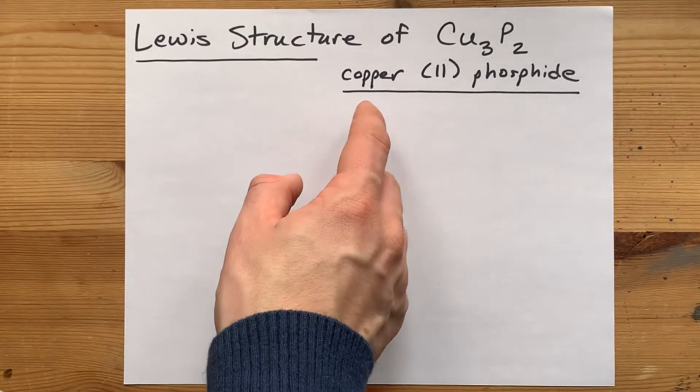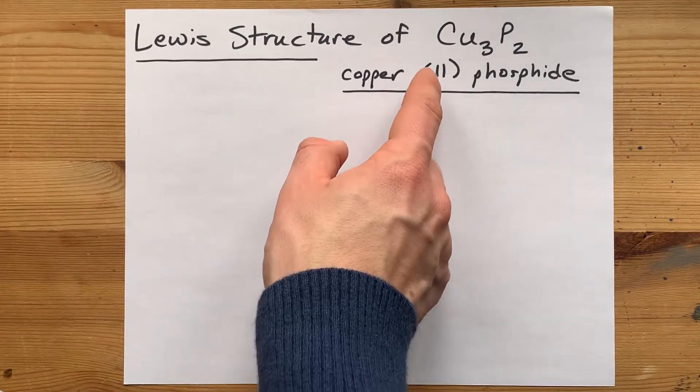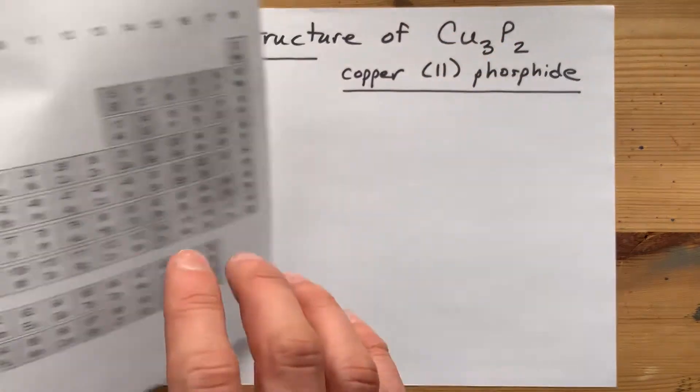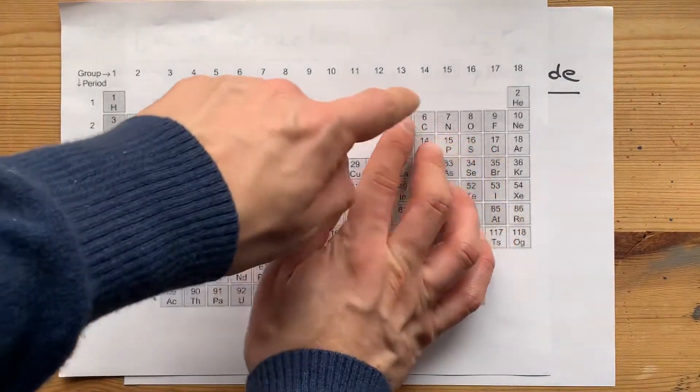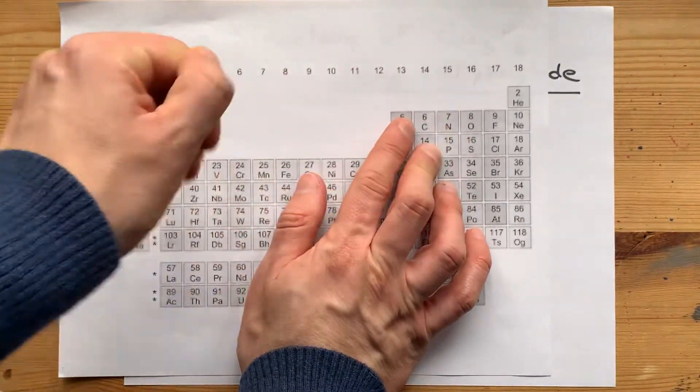The Lewis structure of copper(II) phosphide, or Cu3P2, has copper, a metal, bonding with phosphorus, a non-metal.